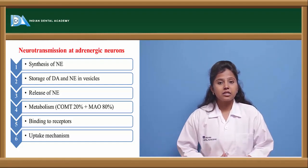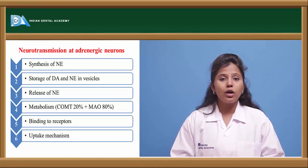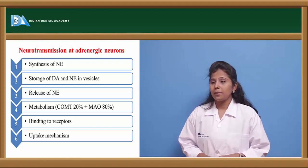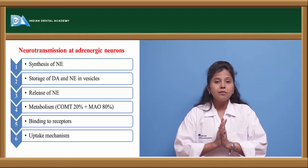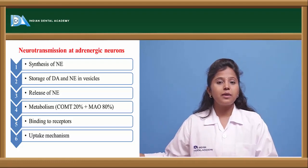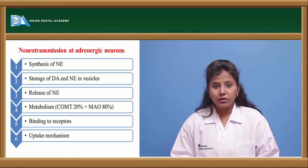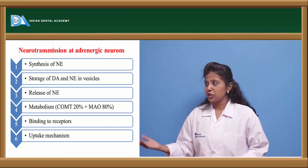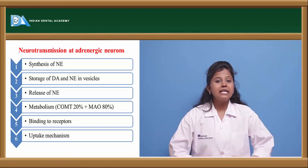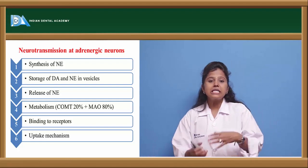After the neurotransmitter shows its actions, it undergoes metabolism. In the adrenergic system, neurotransmitters are metabolized by two enzymes: MAO (monoamine oxidase) and COMT (catecholamine O-methyltransferase). Noradrenaline metabolism is 80% by MAO and 20% by COMT. After binding to receptors and exerting actions, leftover norepinephrine undergoes reuptake back into the system, making this a cyclic process. The reuptake mechanism is very important in the synthesis of noradrenaline.